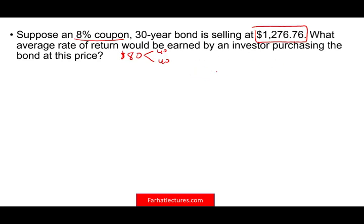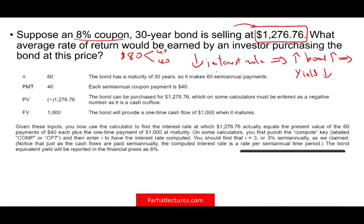Notice what happened here: why would your bond sell at $1,276? Probably because the overall interest rate went down. As a result, your bond went up in value and your yield went down. To compute this, it's $40 divided by $1,276 — approximately 3%.